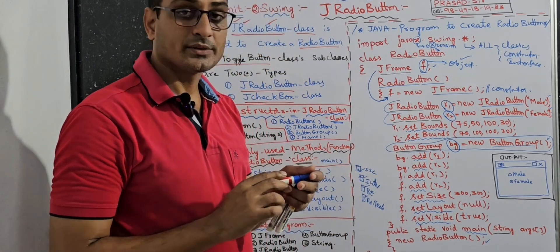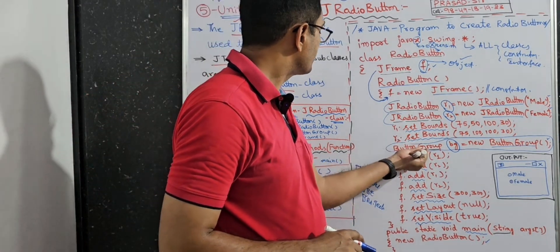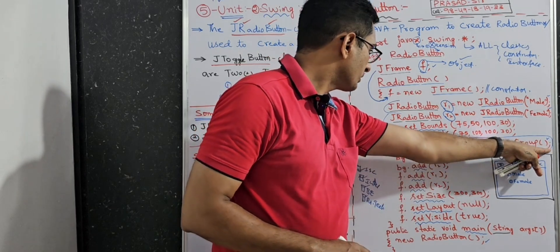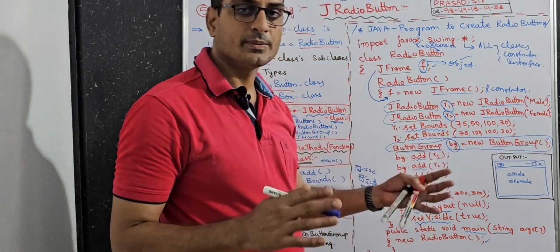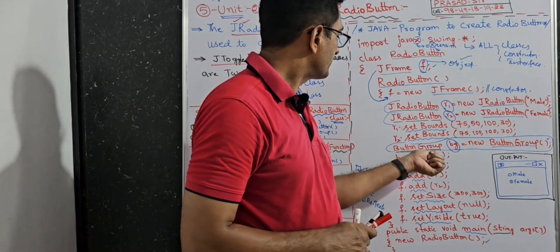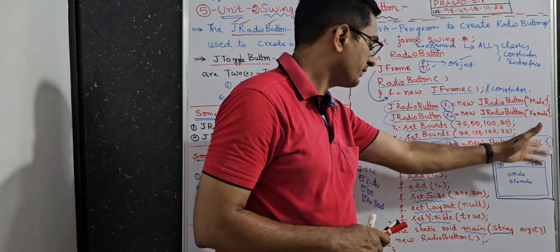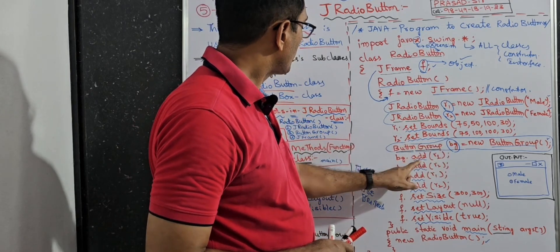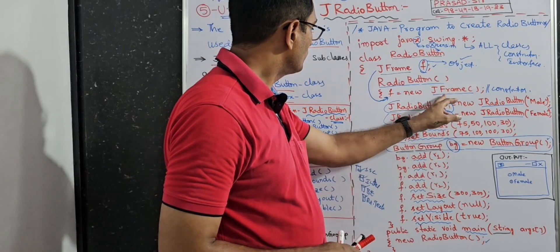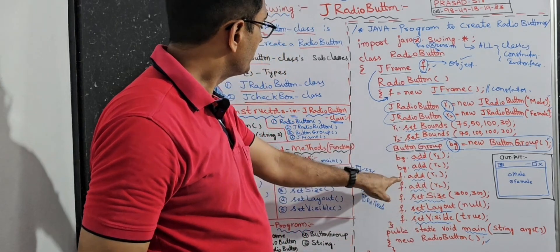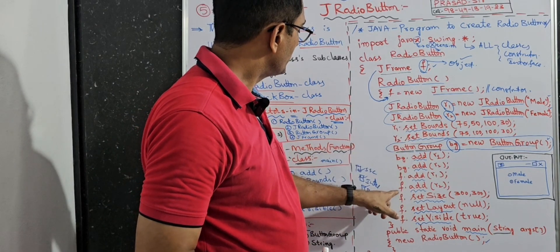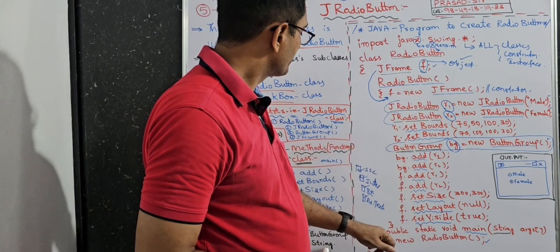These are the syntax for creating an object. BG object dot add R1 — we can add R1 object. And BG.add R2 — this object. And F is also an object here. F.add R1, F.add R2 — adding the radio buttons to the frame.